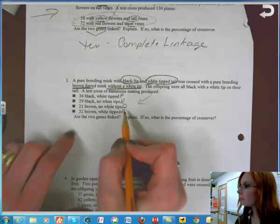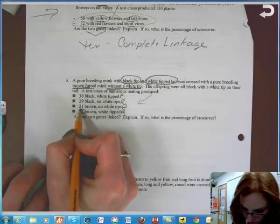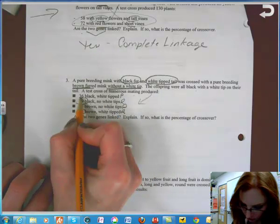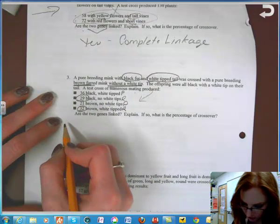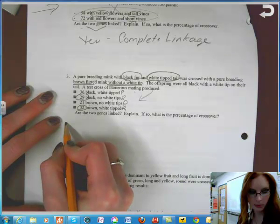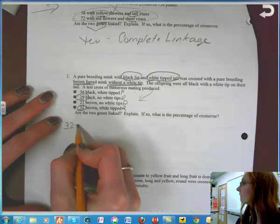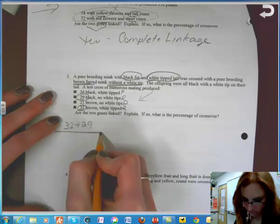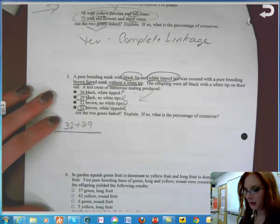So, the numbers I am interested in are 32 and 29. What am I going to write here? 32 plus 29 divided by the total. So try that.